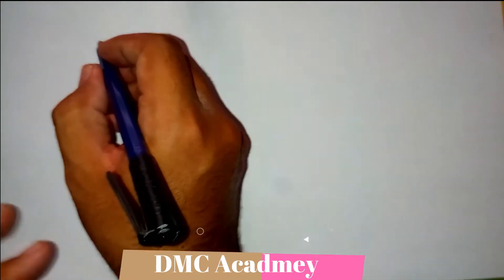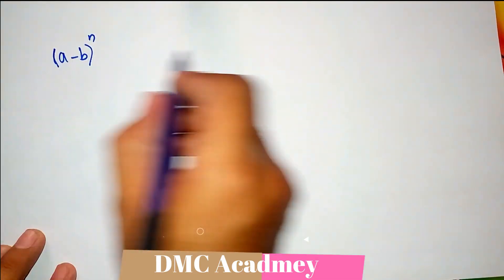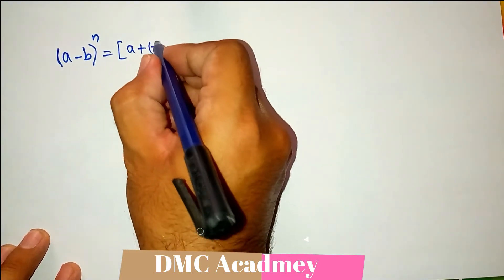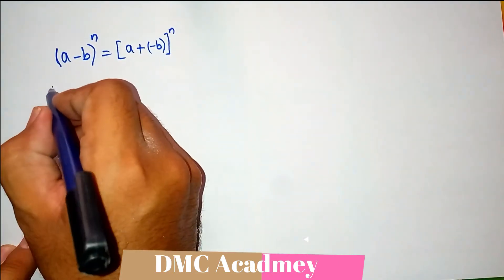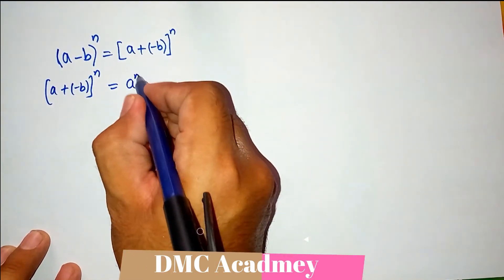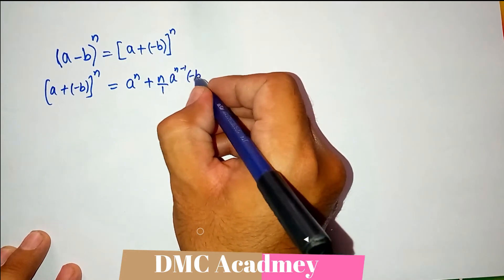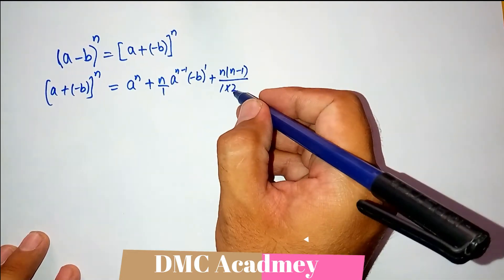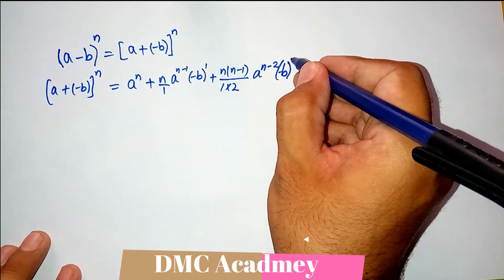When we have a minus b whole raised to power n, we convert it as a plus minus b whole raised to power n to make it easier. Now it follows the same pattern: a raised to power n, plus n divided by 1 times a raised to power n minus 1 times minus b raised to power 1, plus n times n minus 1 divided by 1 times 2 times a raised to power n minus 2 times minus b whole raised to power 2.